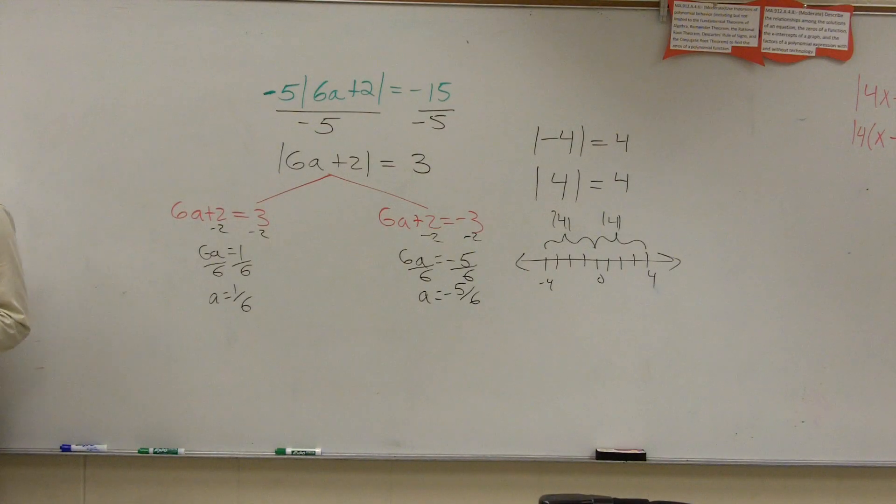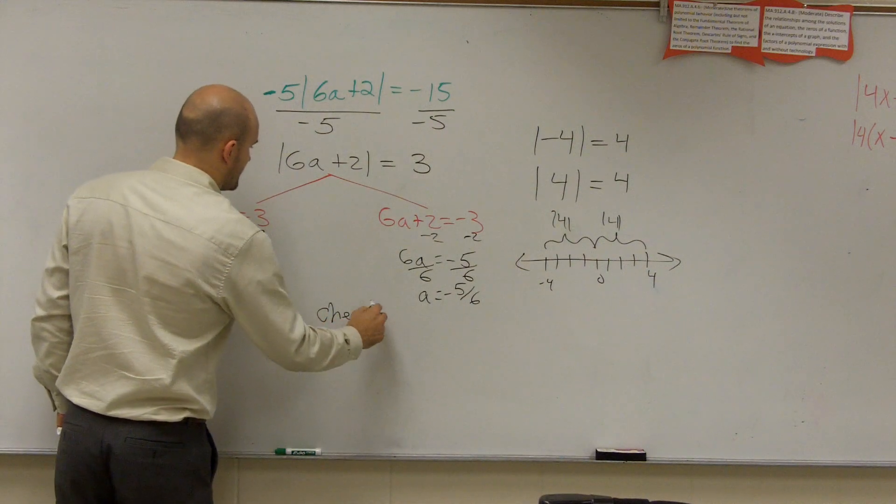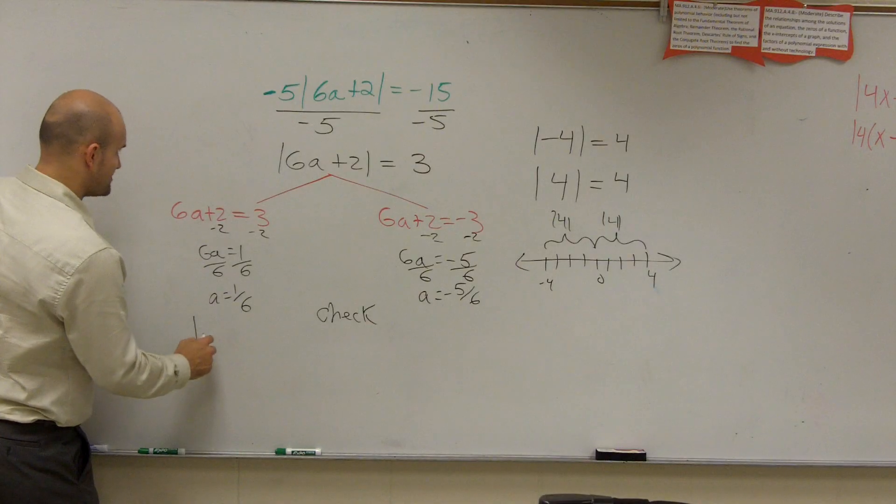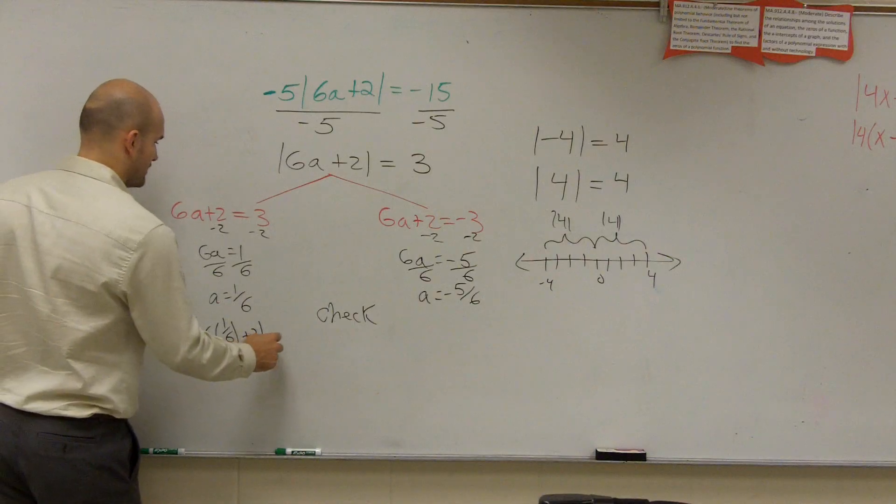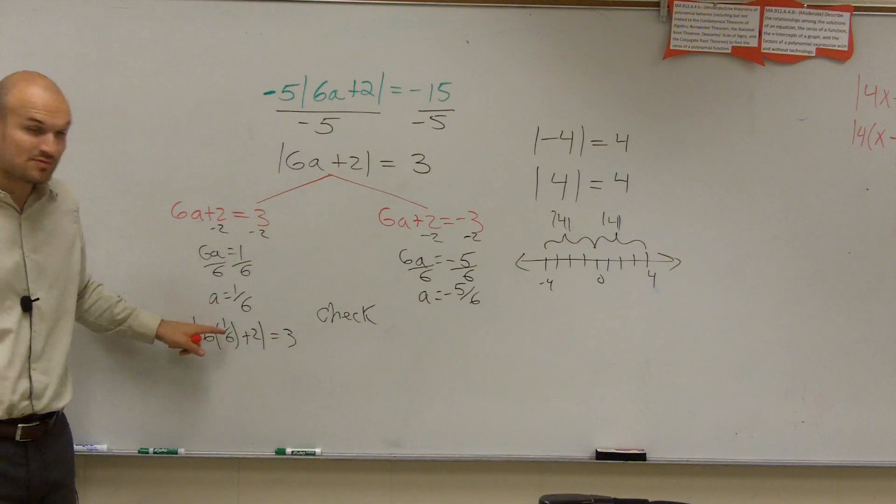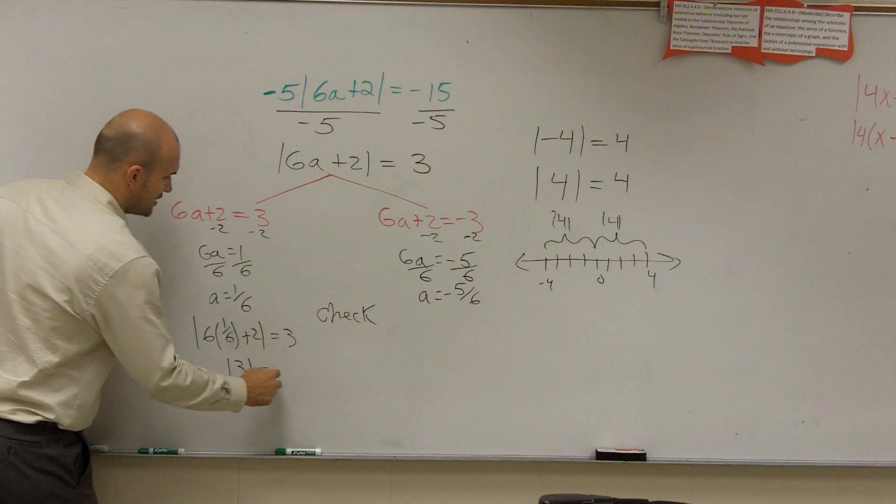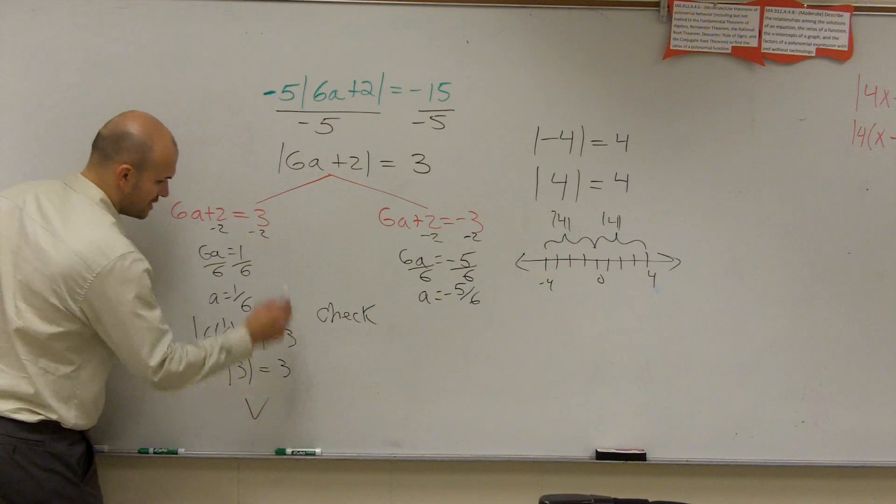Now, the next thing that's important for us to understand about this is we need to make sure we check our solutions. So I'm going to write a nice check. What I'm going to do is I'm going to plug in each one of these values in for a. So I write absolute value of 6 times 1 sixth plus 2 equals 3. 6 times 1 sixth is 1. 1 plus 2 is 3. Absolute value of 3, is that equal to 3? Yes, it is. Check.